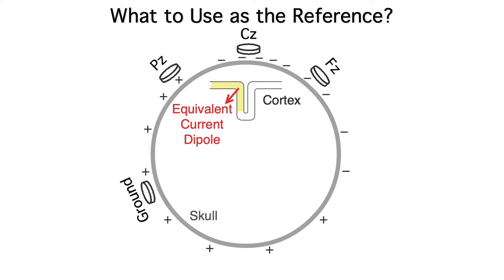Remember, we can put ground anywhere we want, because it gets subtracted out during the referencing process. In an ideal world, we'd have our reference electrode somewhere on the zero line, as shown here.